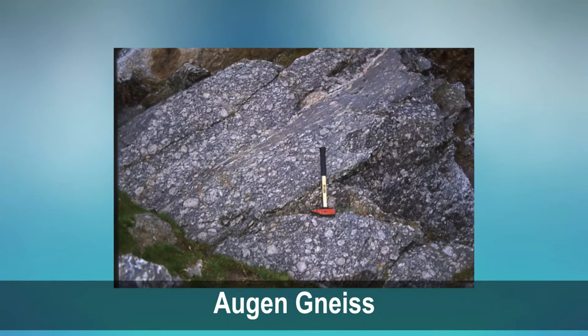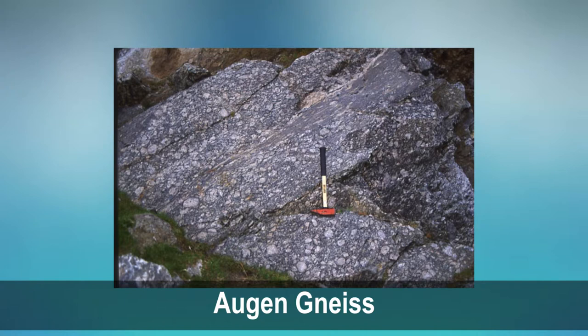Augen gneiss: gneiss containing abundant porphyroblasts or porphyroclasts enveloped by the foliation to give the appearance of eyes — augen in German. Granulites: a granoblastic rock that is rich in quartz and feldspar and almost devoid of hydrous minerals. Lenticular to tabular compositional layering may be present. Granulites are equivalent of acid plutonic rocks, but those containing quartz, perthite, potassium feldspar, and hypersthene are referred to as charnockite.